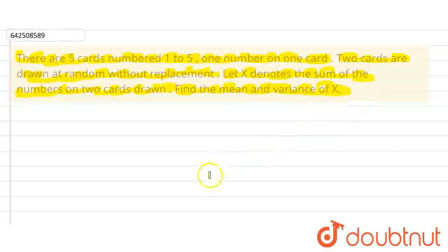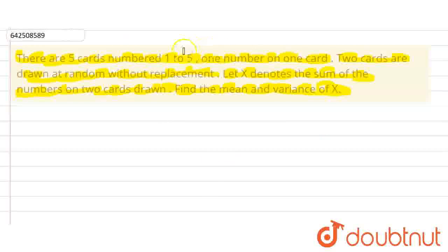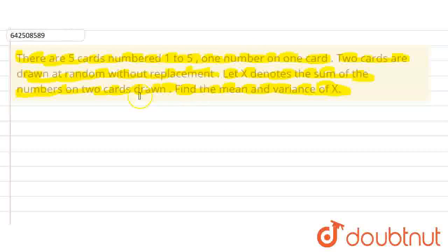In this question, we have given that there are five cards numbered one to five and there is only one number on one card and two cards are going to be drawn randomly without replacement. We have to find the mean and variance of X, where X denotes the sum of the numbers on the two cards drawn.